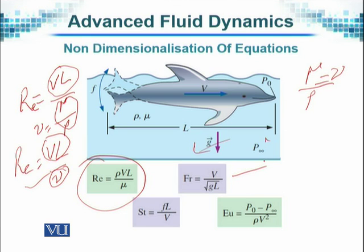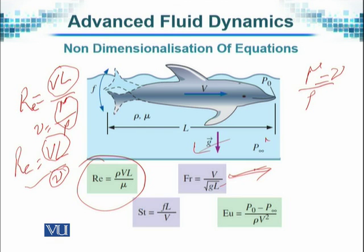Similarly, the Froude number is the ratio of velocity over the square root of gravity times length. In a way, this is the ratio of momentum forces to gravitational forces. It shows how the fluid is behaving. If Froude number is greater than 1, the speed is dominant; when it is 0, velocity V is zero; and when it is very small, the fluid flow is moving very slowly but gravity is dominant and plays an important role.